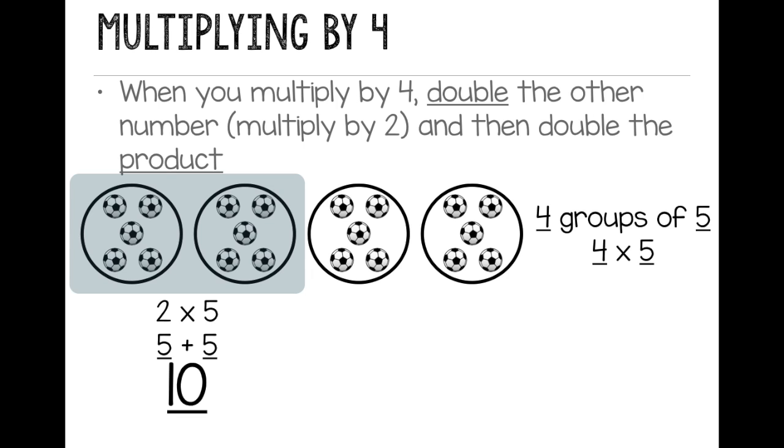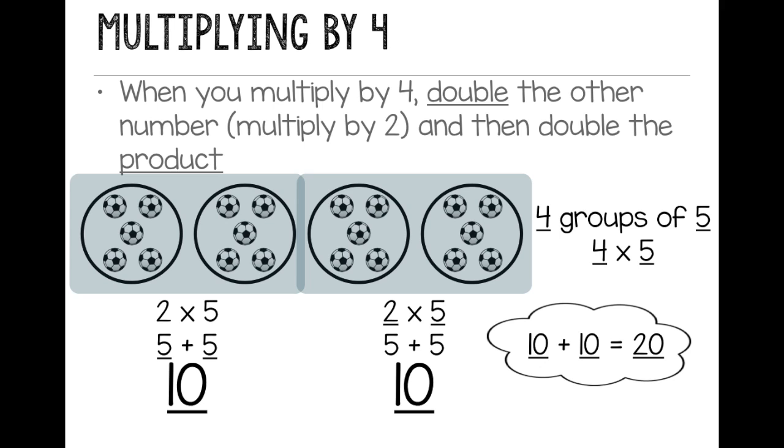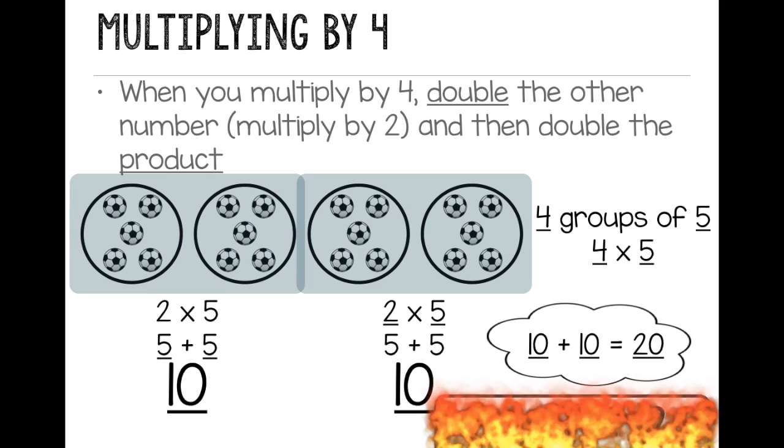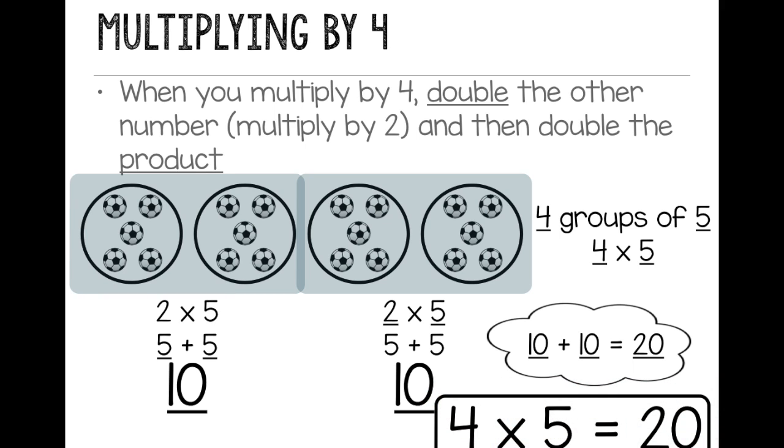And then I'm going to double my 10, because my other set of soccer balls is also the same as 2 times 5, or 5 plus 5, which equals 10. So I can think in my head, 10 plus 10, which equals 20. So I know that 4 times 5 equals 20. I doubled the other number. 5 plus 5 is 10. And then I doubled that. 10 plus 10 makes 20. And that's how I can get my product of 4 times 5 equals 20.